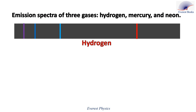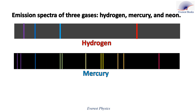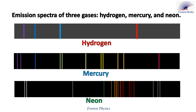This figure shows the line emission spectrum of hydrogen — we observe four spectral lines. The figure also shows the line emission spectrum of mercury, which includes many spectral lines. And this figure shows the line emission spectrum of neon, which also has many spectral lines.